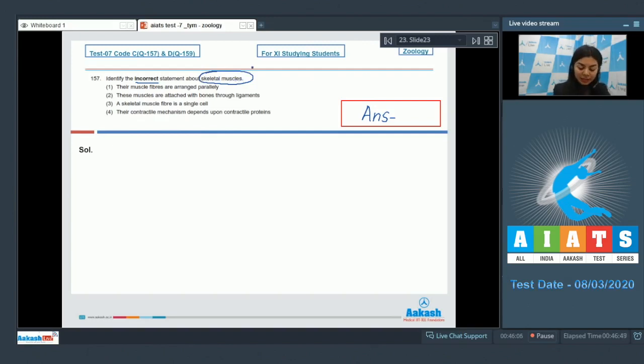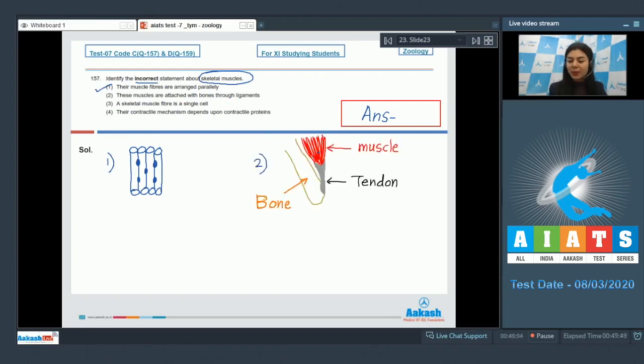We need to identify or select an incorrect statement about striated voluntary or skeletal muscles. Option one, their muscle fibers are arranged parallelly - this is true. These fibers are cylindrical in shape and they are placed next to each other in the form of bundles. The nucleus is positioned peripherally. Each of the cylinder represents a muscle fiber. Option two, these muscles are attached with bones through ligaments.